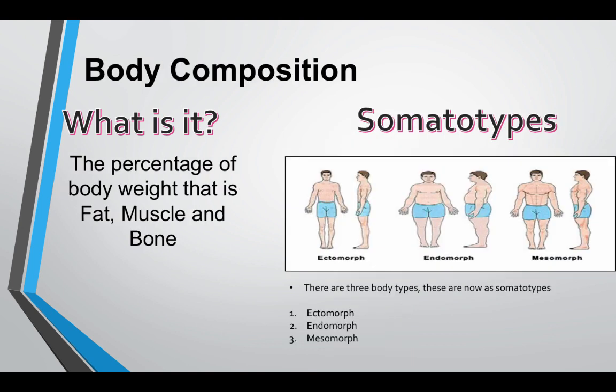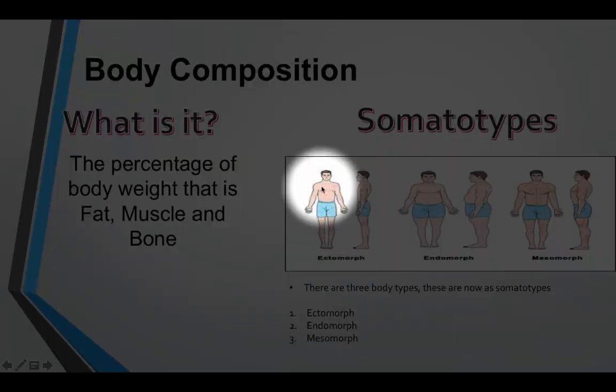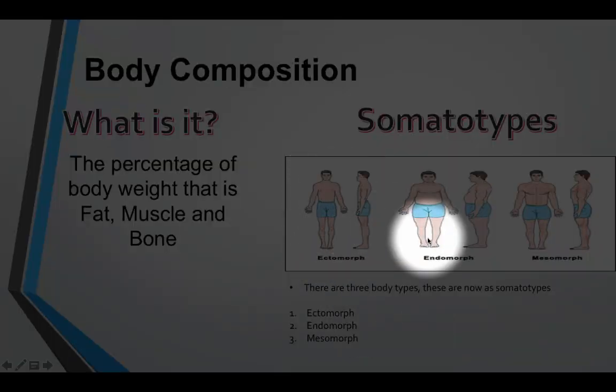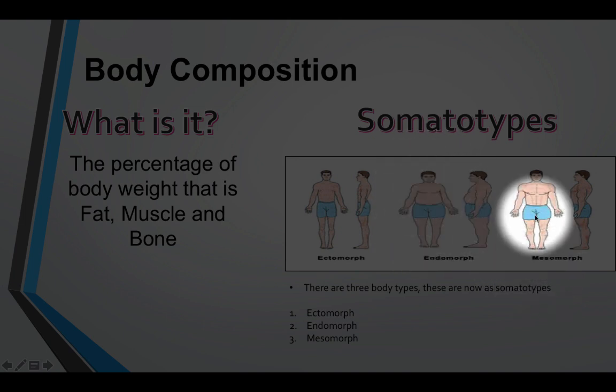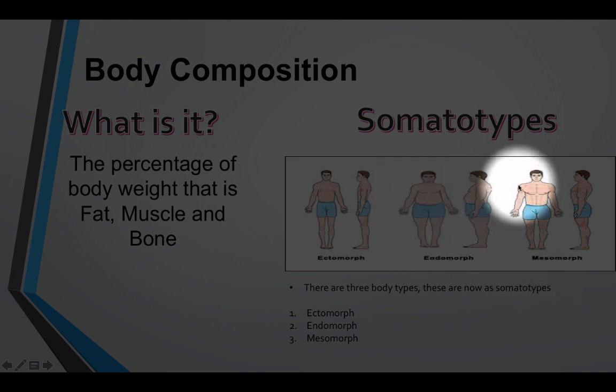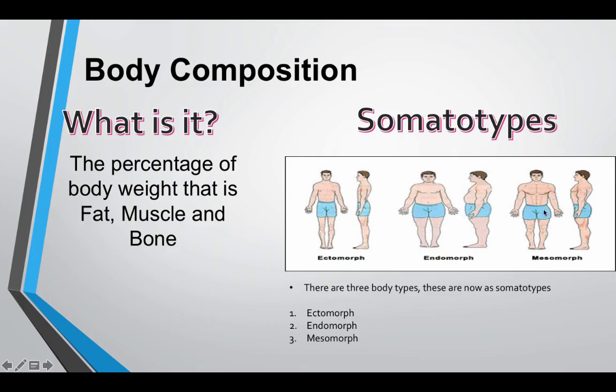Body composition is the percentage of your body weight that is fat, muscle, and bone. The three different types of body are referred to as somatotypes. This breaks down to ectomorph, endomorph, and mesomorph. Ectomorphs are usually very narrow and skinny. Endomorphs are usually a round shape. Mesomorphs usually have a V shape, so their hips are smaller than their shoulders. Everybody will be a combination of these three.